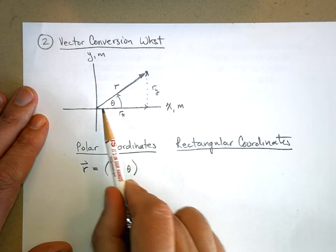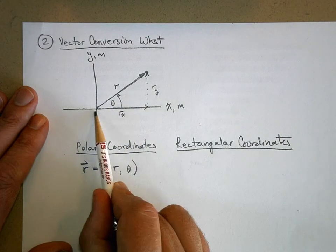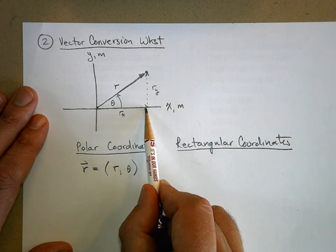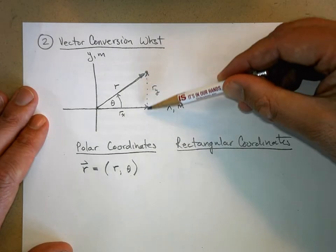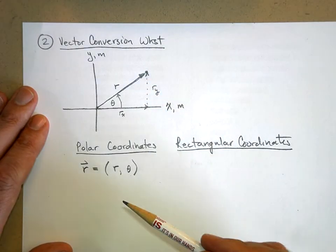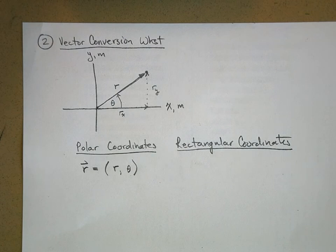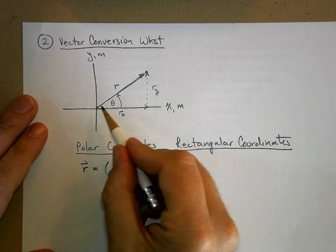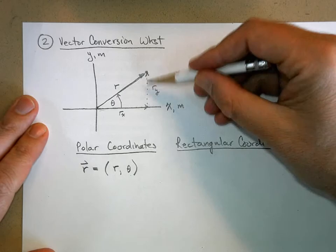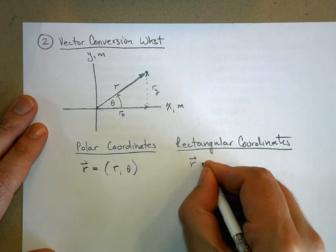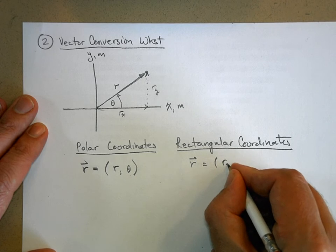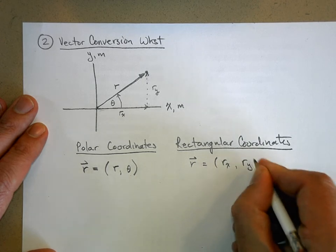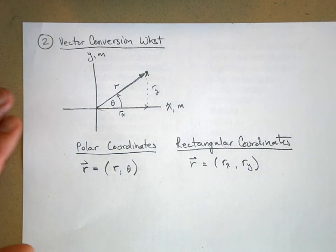And by the way, this is called the x component of vector r, and this is called the y-component. We have two component vectors. We've broken the one vector up into two other vectors, the x-component and the y-component. So I would say vector r here is equal to r sub x and r sub y.